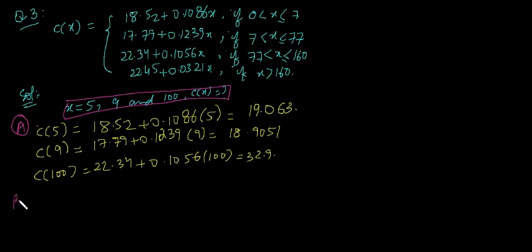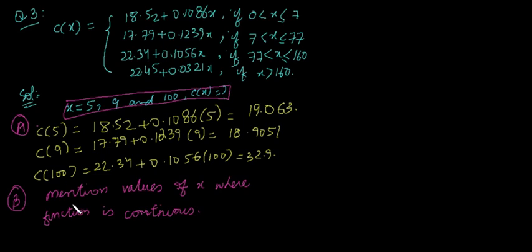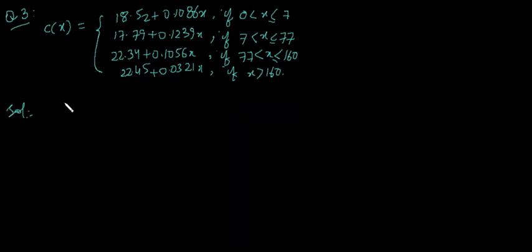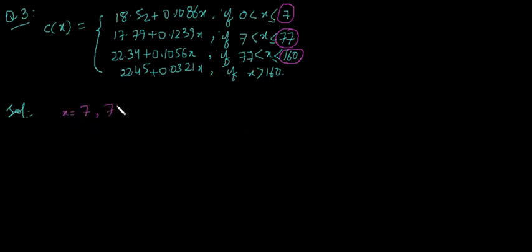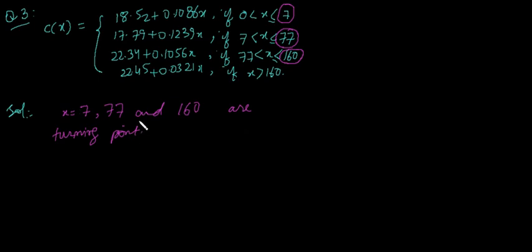The second part of the problem is to find the values of x where the function is continuous. We look for the turning points, which are x equals 7, 77, and 160 — the points where the left and right formulas differ. These are the turning points where the function may cease to be continuous, so we shall discuss continuity at each of these points.